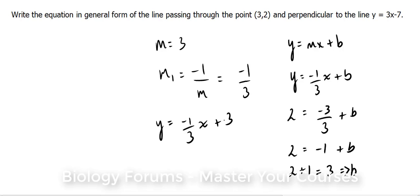That is in slope y-intercept form. They want it in general form, so what we're going to do next is bring everything over to one side. We end up with y minus x over 3 minus 3 equals 0.